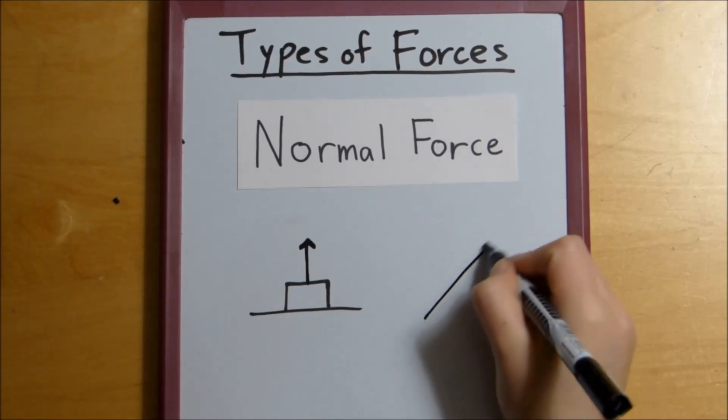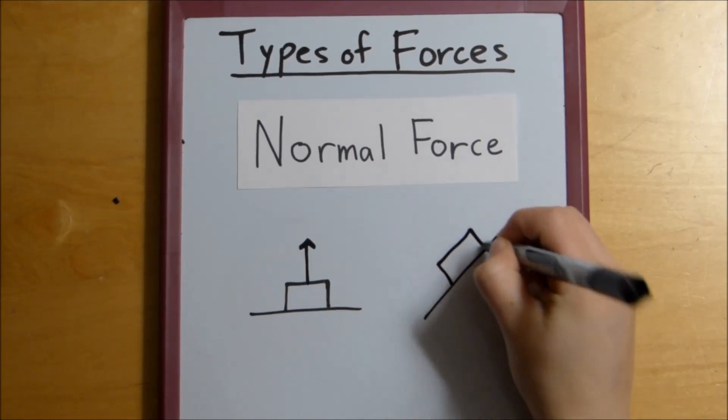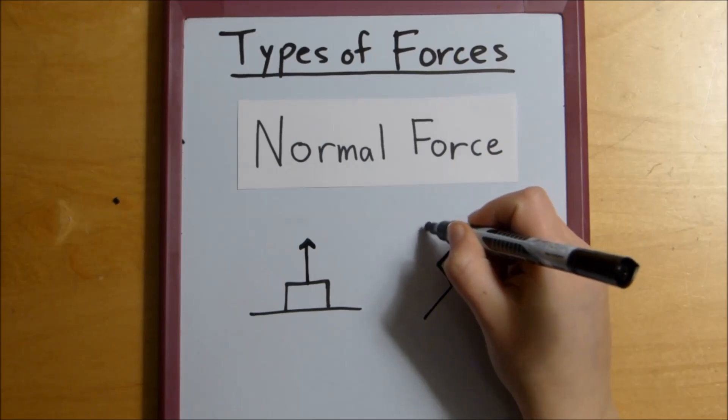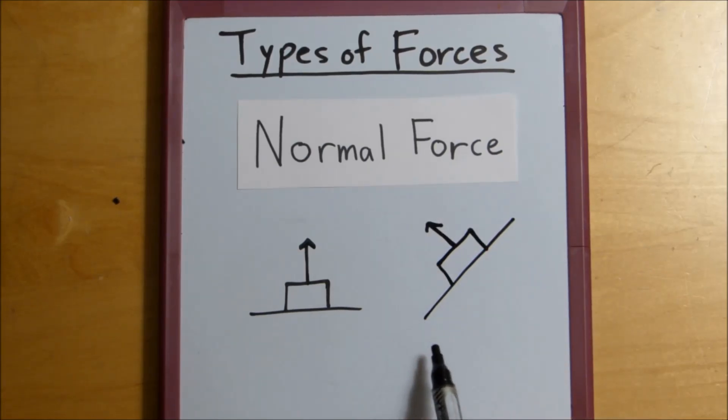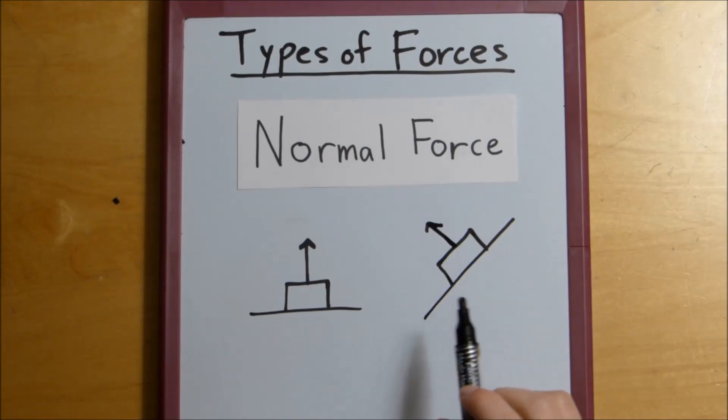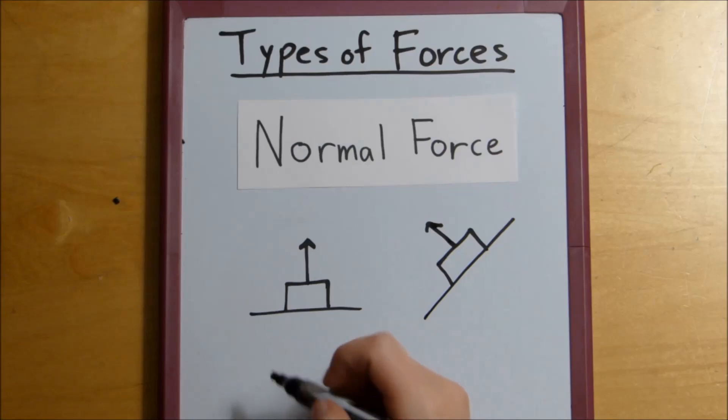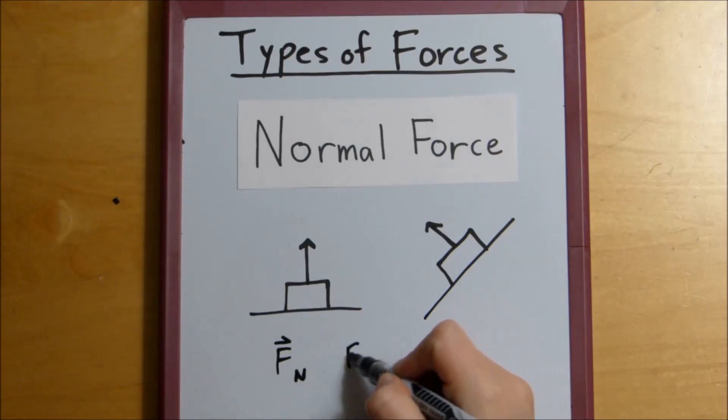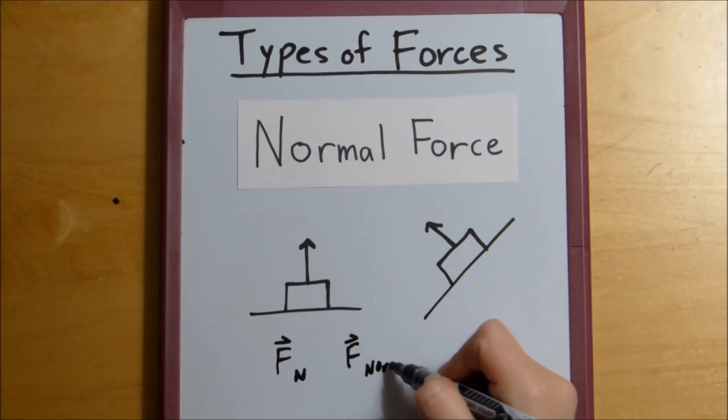But, if the box was on a hill, we would say that the normal force is off to an angle, because the surface is no longer flat. So that means perpendicular no longer means that it would be up like this, because that wouldn't make a 90 degree angle with the surface. It has to be like this. And this is often written as Fn or F norm, right?